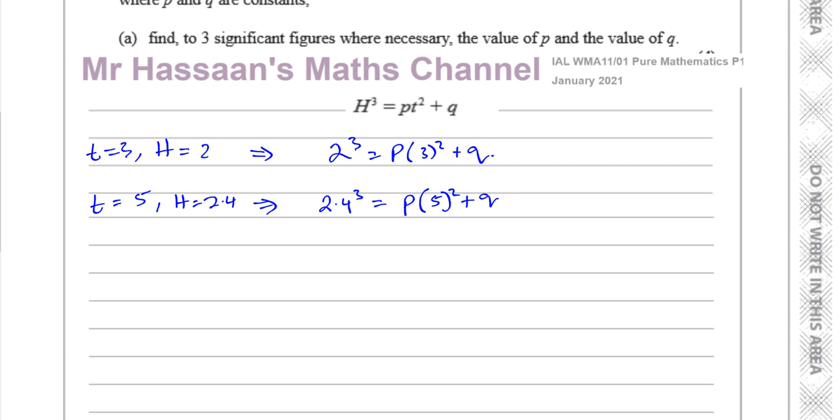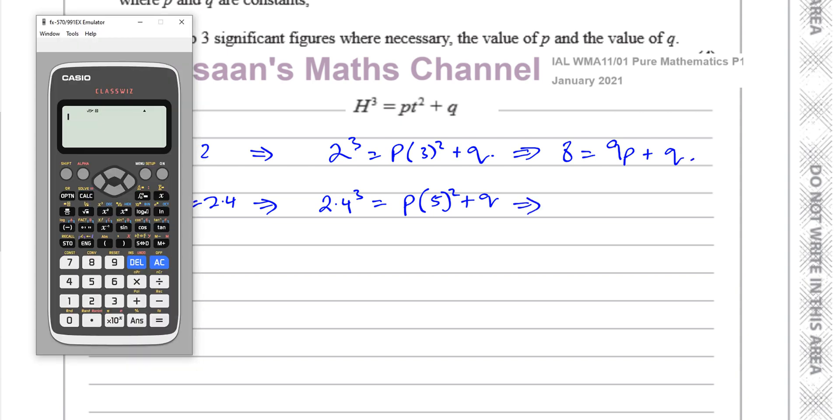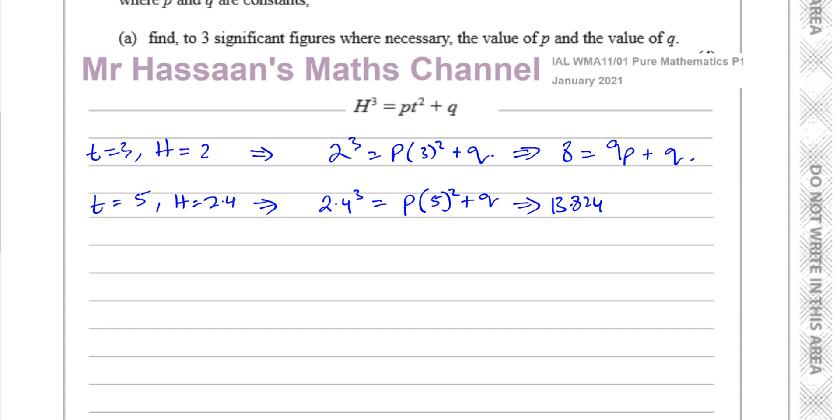Okay, so first of all let's just simplify them a bit. This is going to give me 8 equals 9p plus q. And this is going to give me 2.4 cubed, that gives me 13.824, so that's 13.824 equals 25p plus q. So you have equation 1, you have equation 2. We can solve these equations simultaneously.